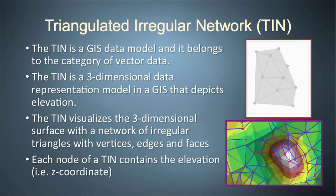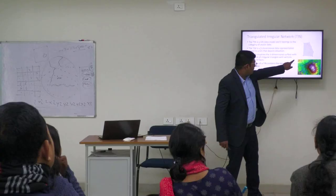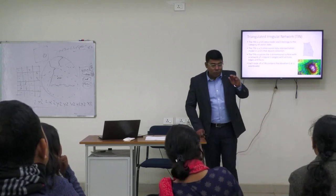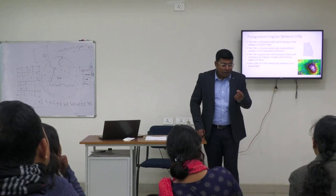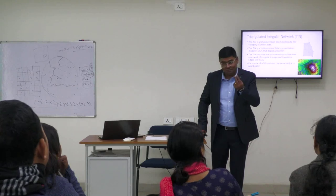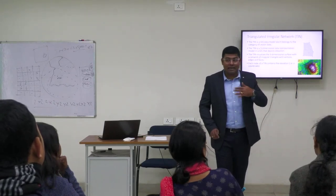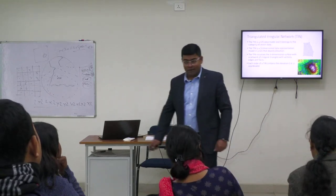This is the Triangulated Irregular Network, or TIN. TIN also belongs to the category of vector data. Basically, TIN data represents elevation and enables us to visualize elevation in a three-dimensional data representation model in GIS. It is a 3D data where we have X, Y, and Z information. Each node in the TIN data carries elevation information, and when visualized, these nodes are elevated according to their elevation value, giving a 3D feel in the GIS environment. TIN enables three-dimensional analysis.